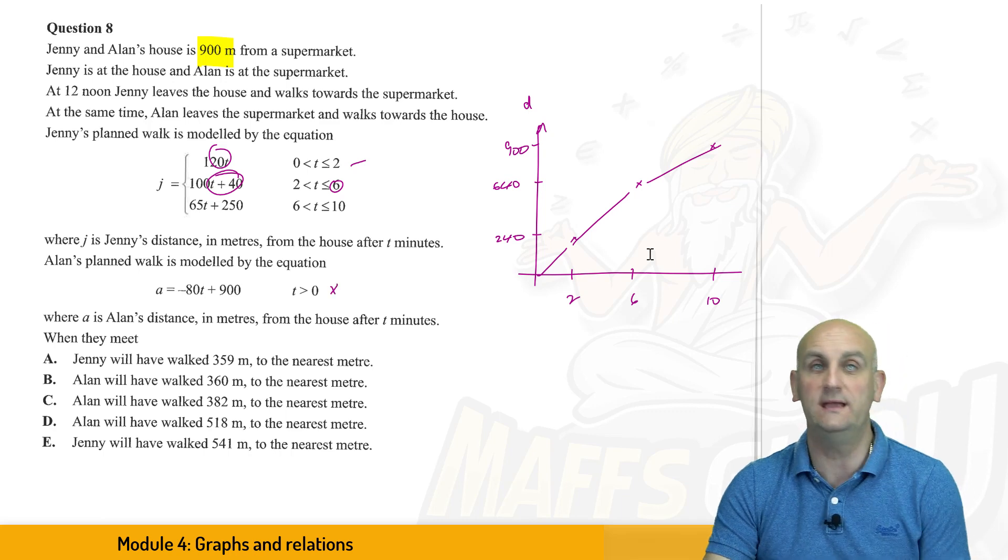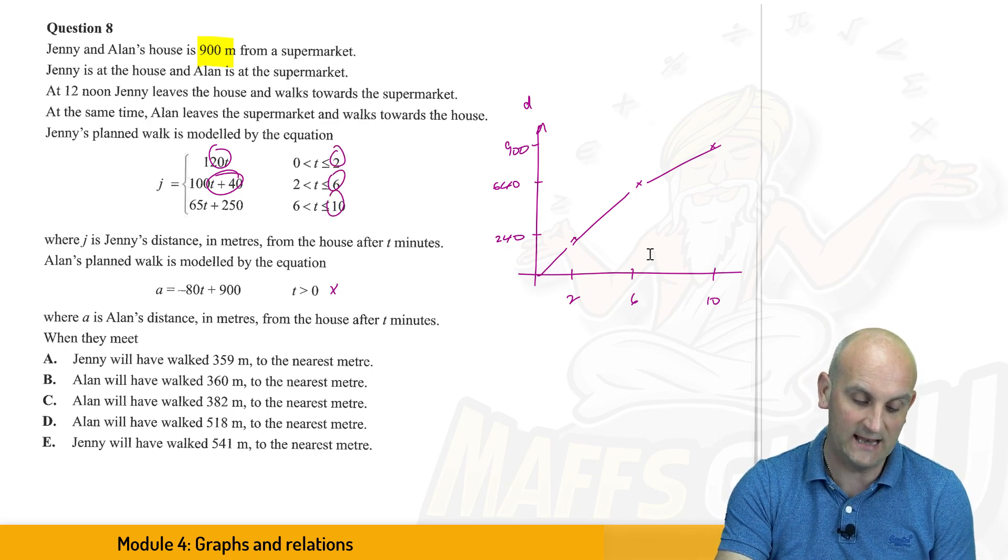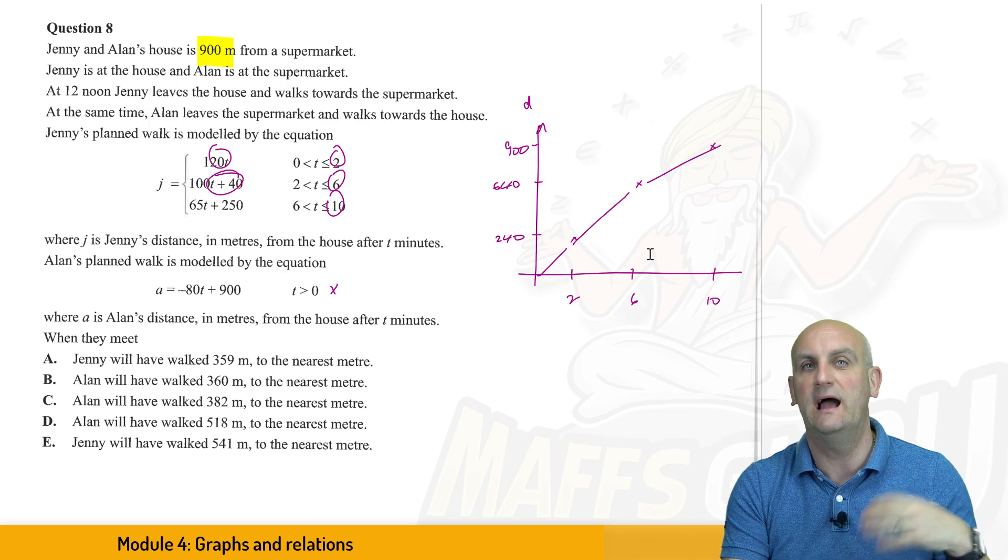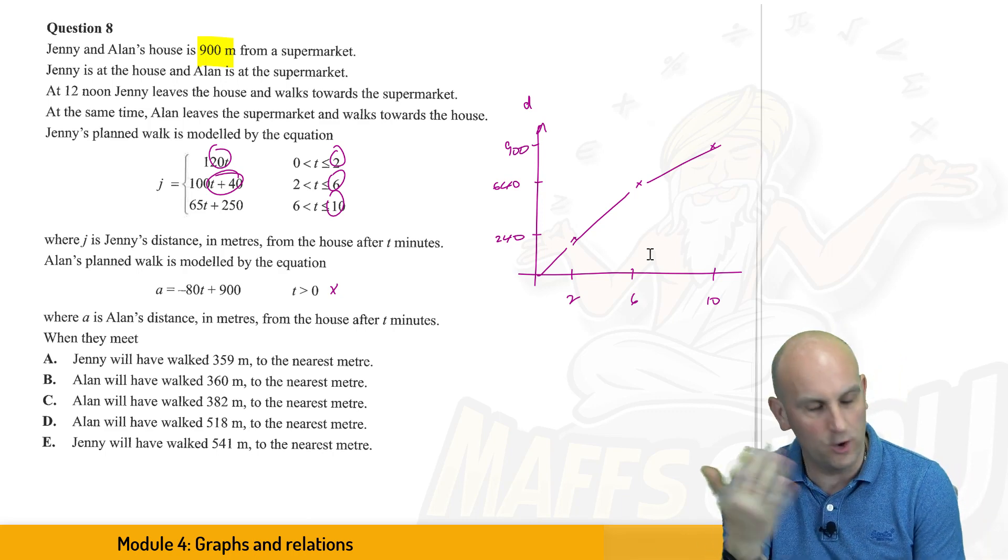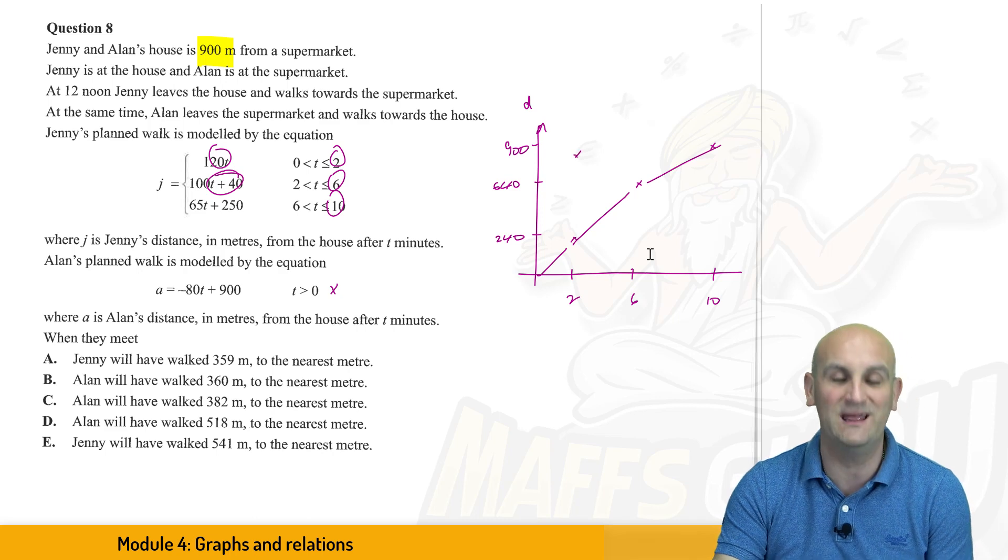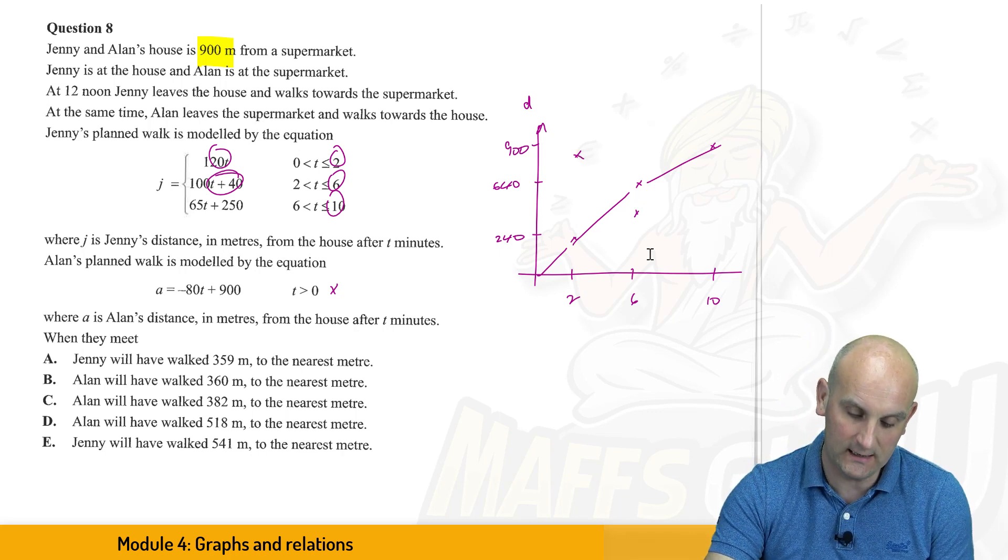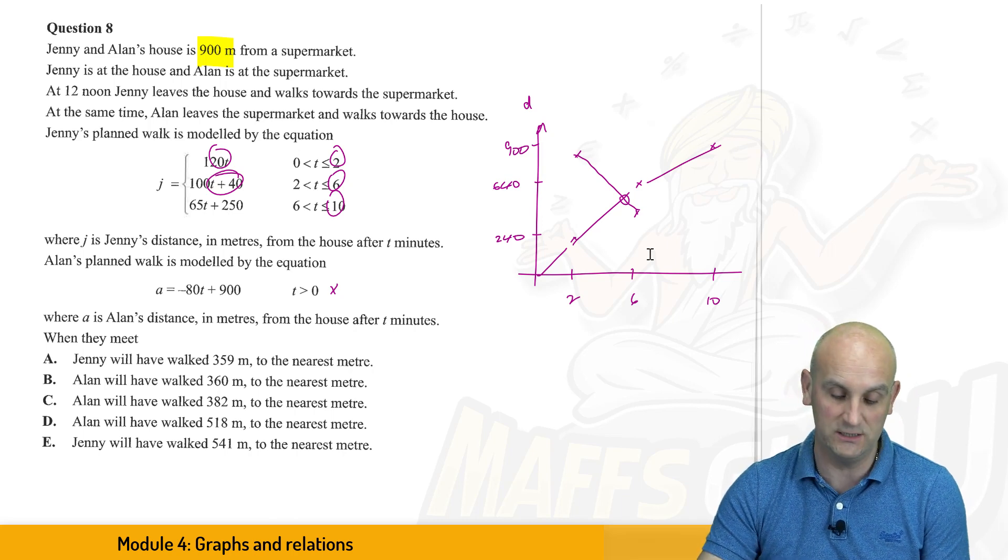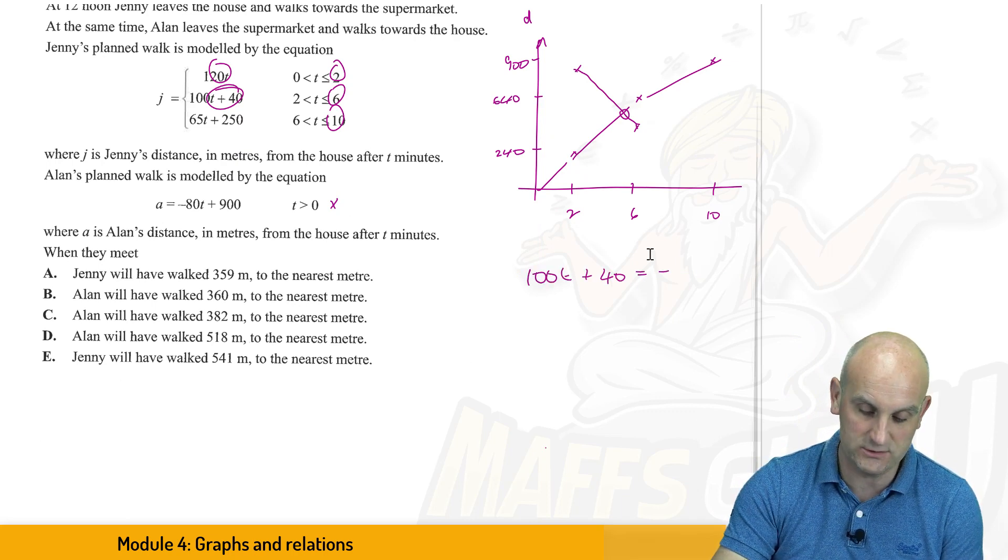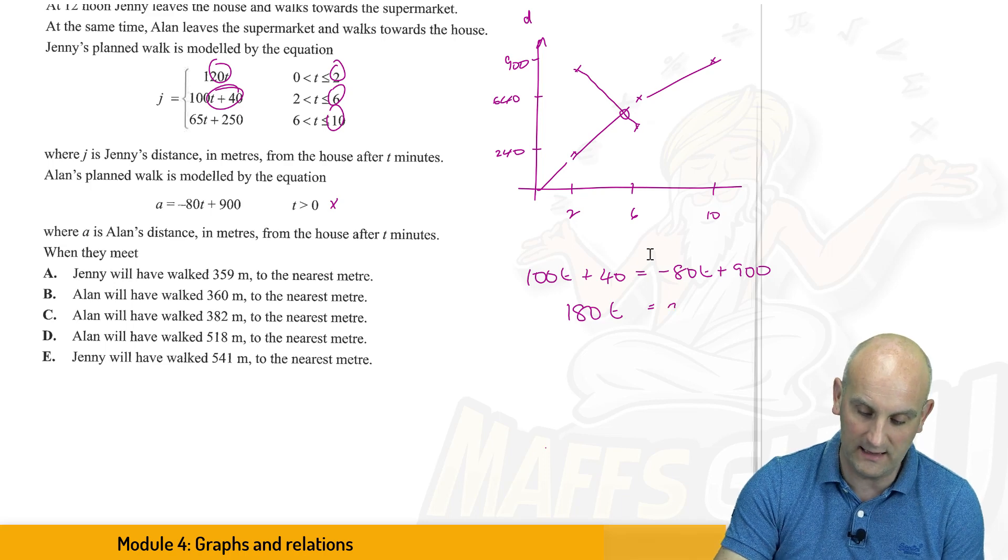Now, Alan did things the other way. So he starts at the supermarket, and then he comes back. And again, what I did was I put each of these values, 2, 6, and 10, into Alan's equation, because I want to see which part of Jenny's graph they cross at. That will give me the time they're effectively meeting, and then I can use that information to find out how far people are away from home or supermarkets or what have you. So when I did that, when I put Alan's t equals 2 into his equation, what came out was 740. So that put me there. It hasn't crossed the graph. When I put 6 in, what I got out was 420, which put me roughly speaking here. So yes, that is the two sections where those graphs actually cross. So scrolling up a little bit, I now know that I can put 100t plus 40t equal to Alan's equation of minus 80t plus 900. Do a little bit of shifting around. Sorry, 180t worked out to be 860.